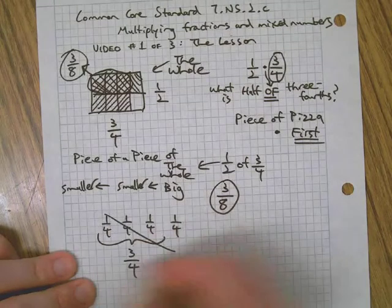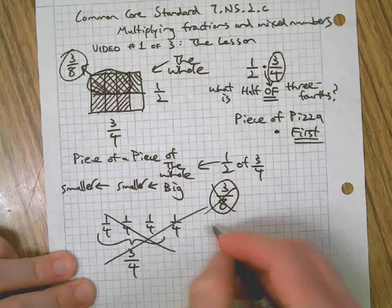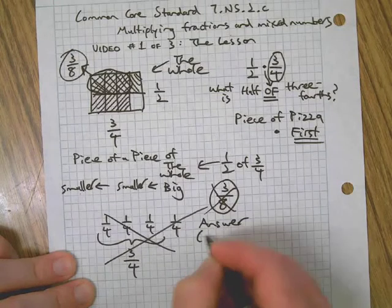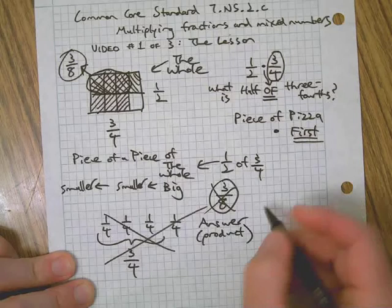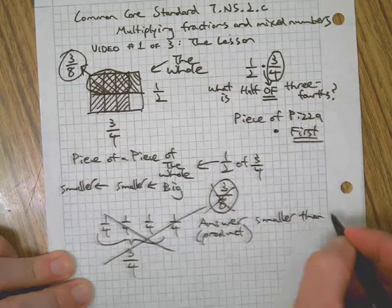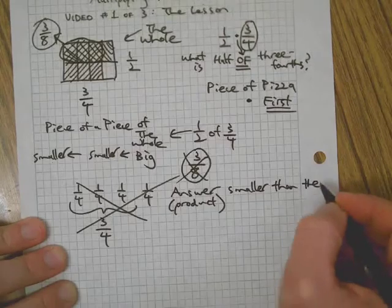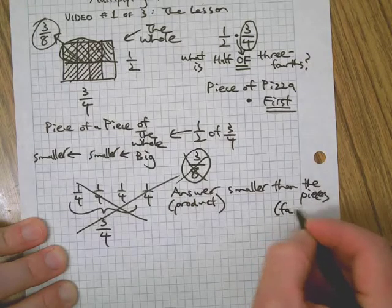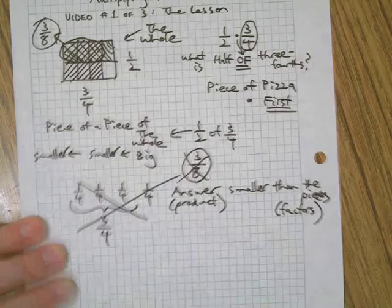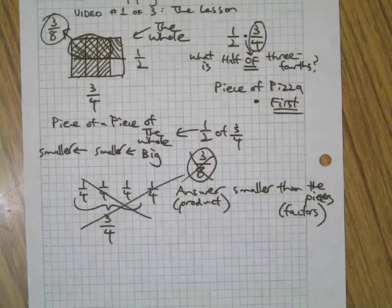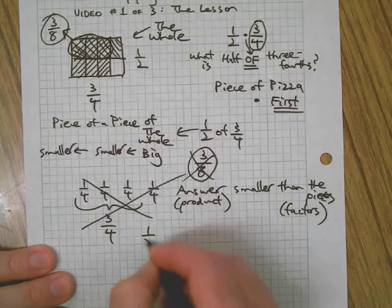Okay, get rid of that. Because of that, when you're multiplying fractions, the answer, also known as the product, is smaller than the pieces. The pieces are called the factors. Factors multiply to get the product. In this case, when we're dealing with fractions, they are pieces and the answer is called the product.